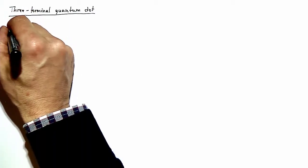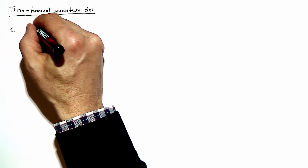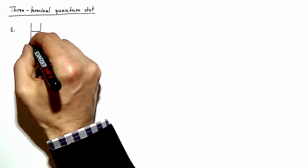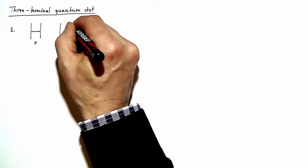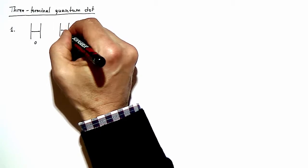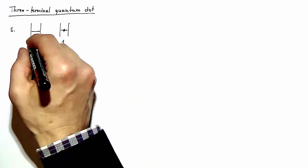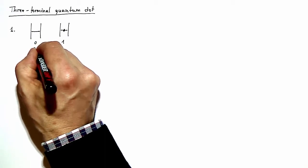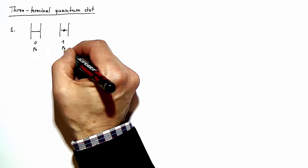We start by making a little sketch of the two states of the quantum dot. The two states we consider are the empty quantum dot — I will call this state 0 — and the occupied quantum dot — I call this state 1. Correspondingly, there will be probabilities P0 for the dot to be in state 0, and P1 for the dot to be in state 1.